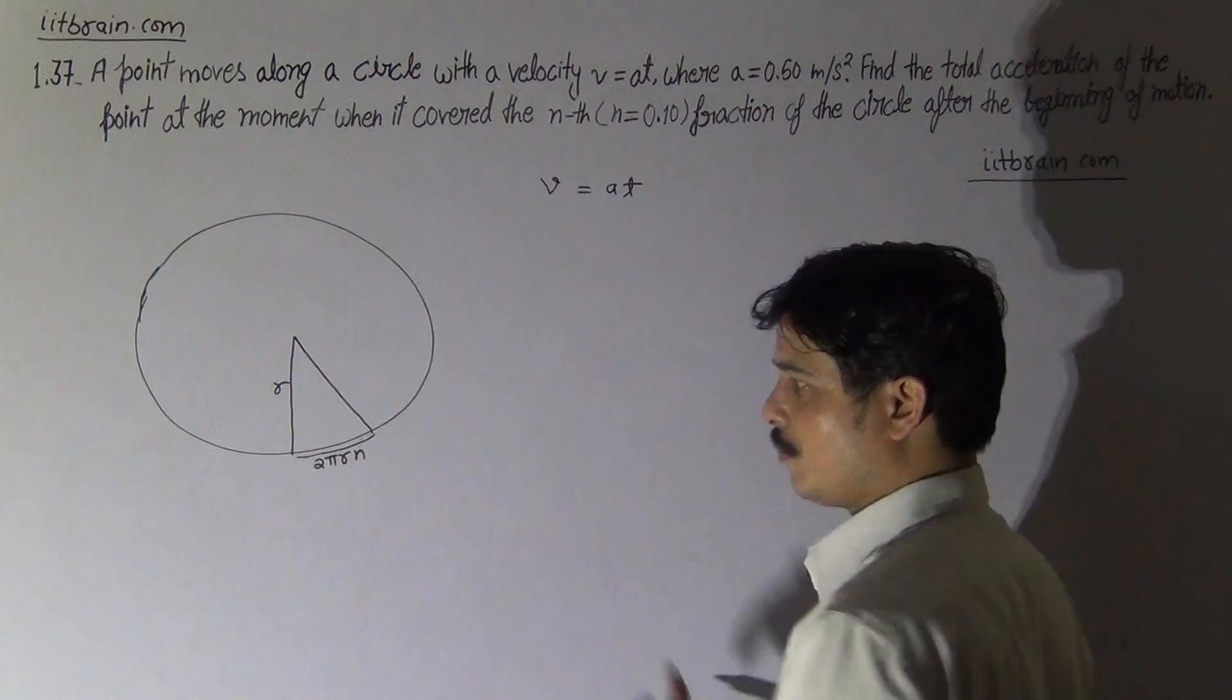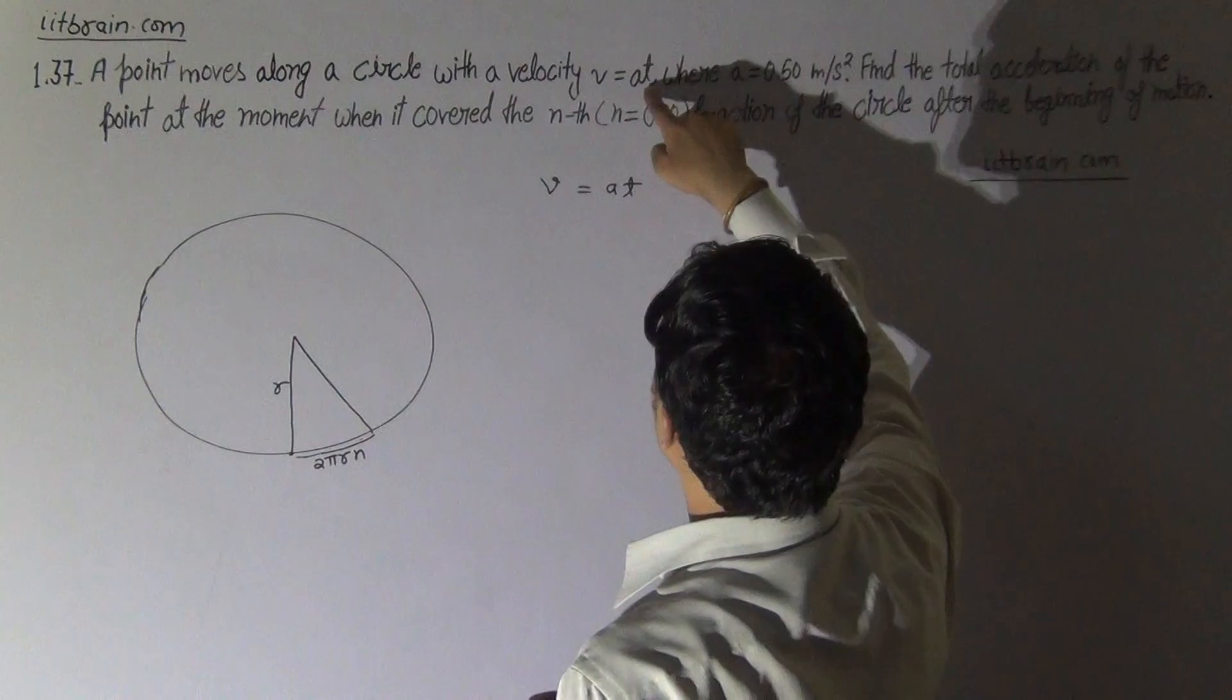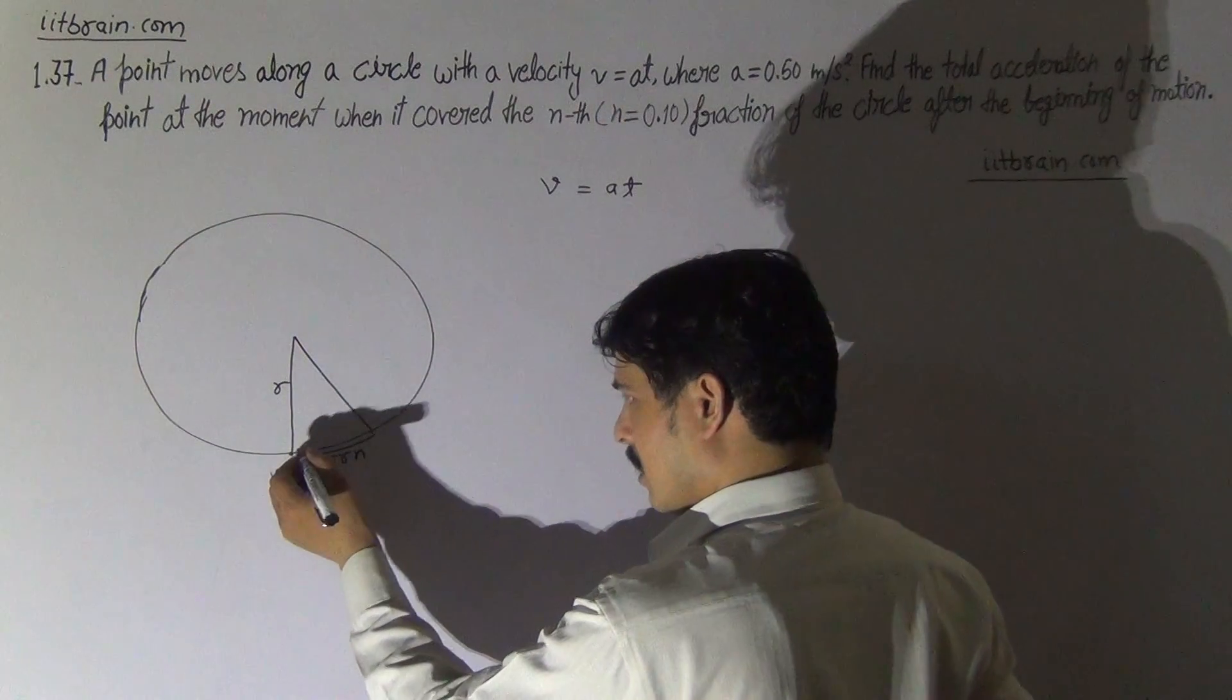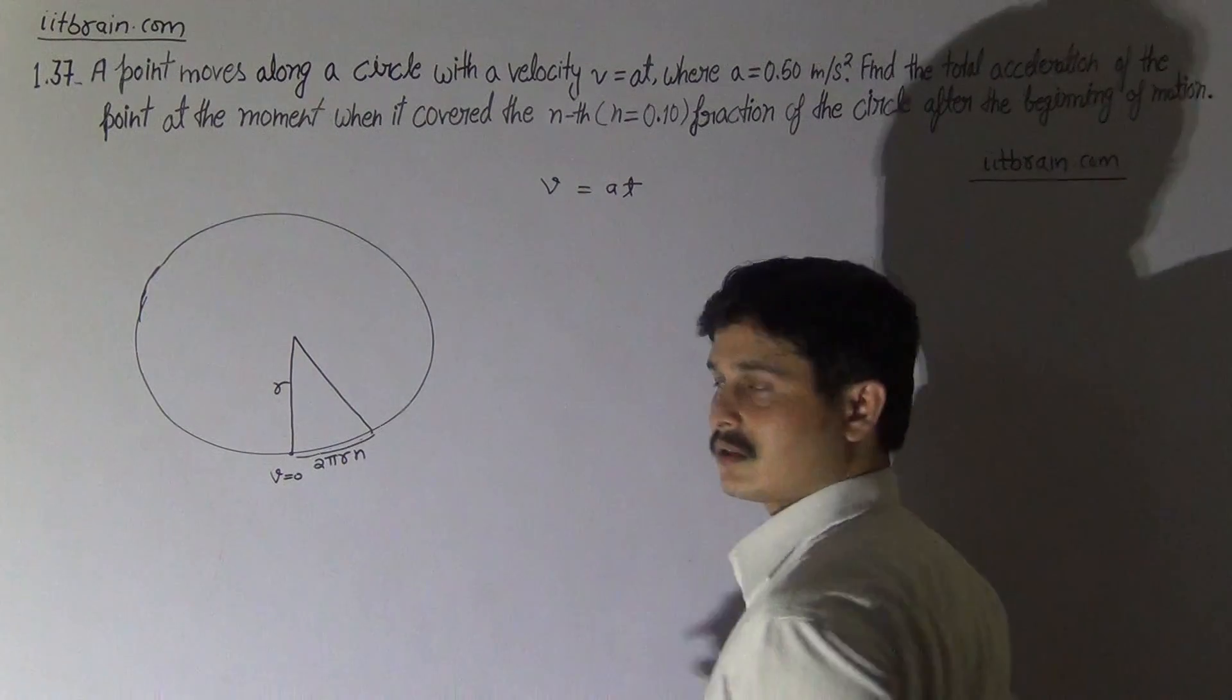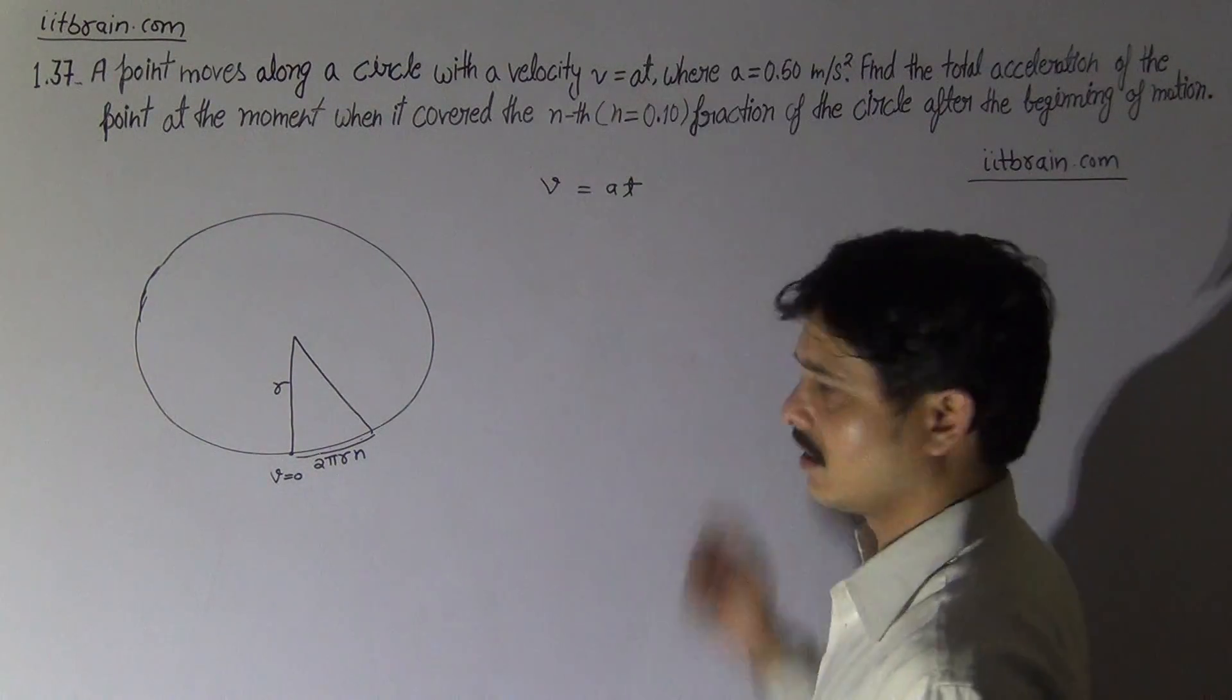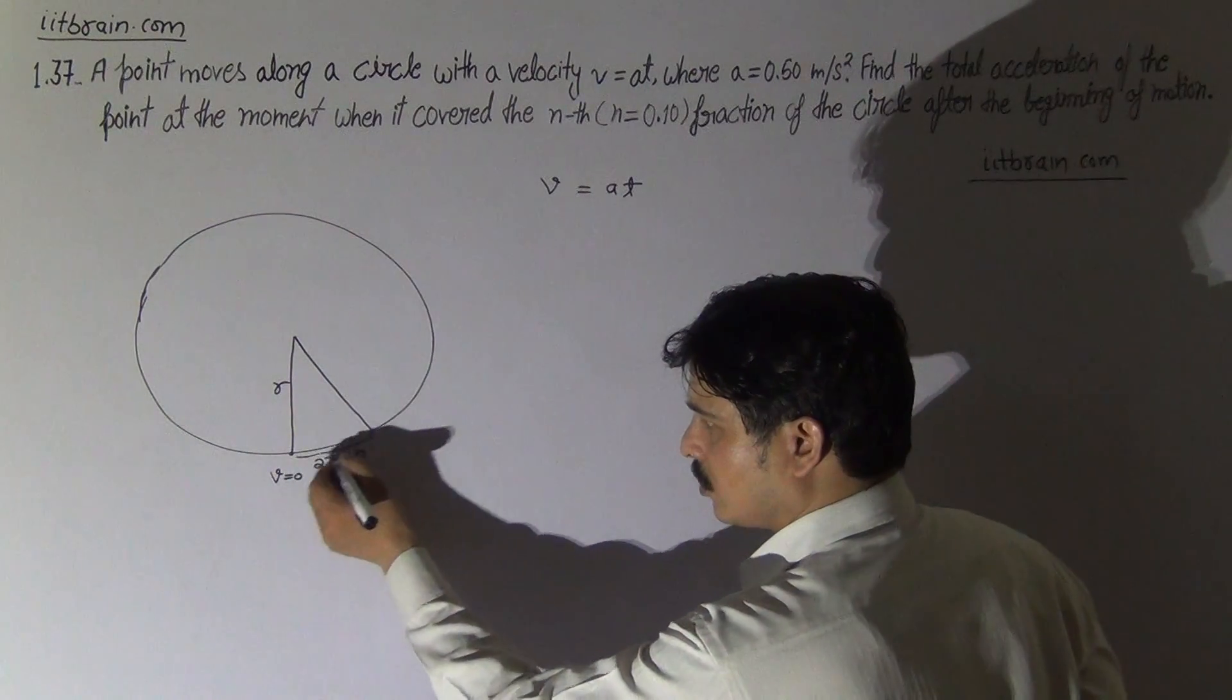So it starts from this point where at t about 0, V will be 0. At the start its velocity is 0. After travelling this much distance, it will gain a velocity V = at. First we have to calculate the time taken to travel this much distance.